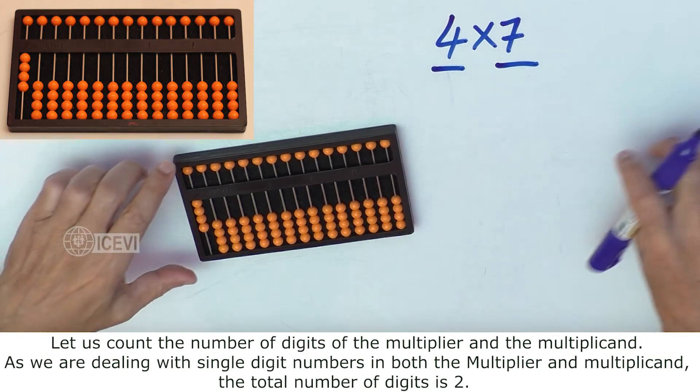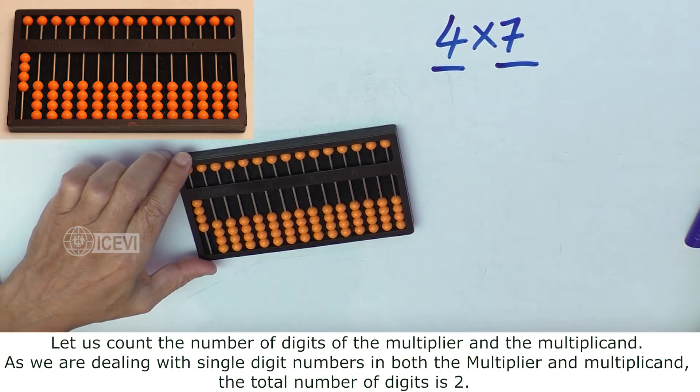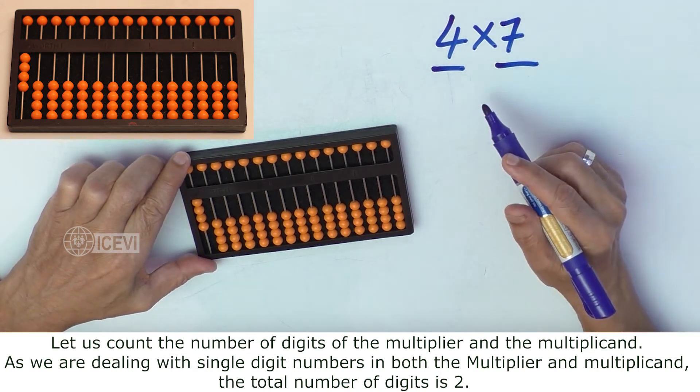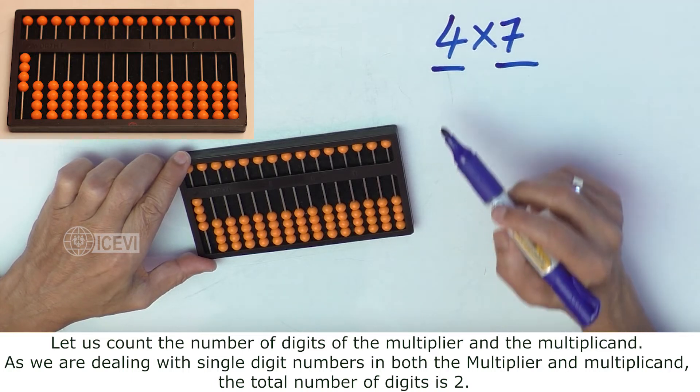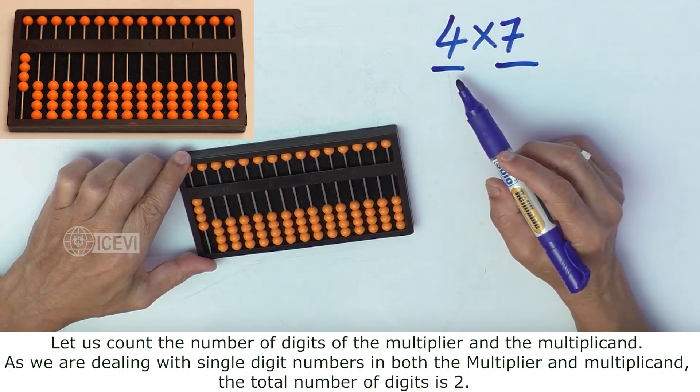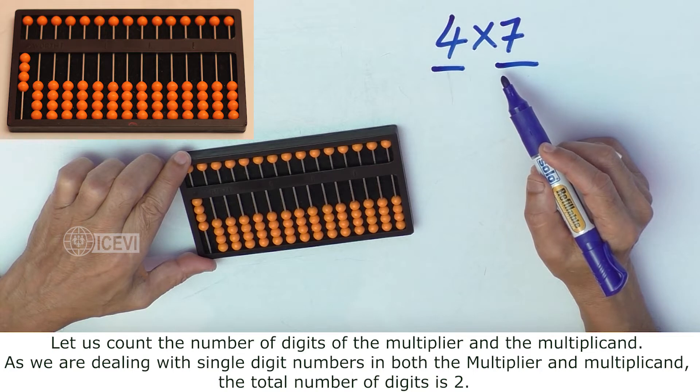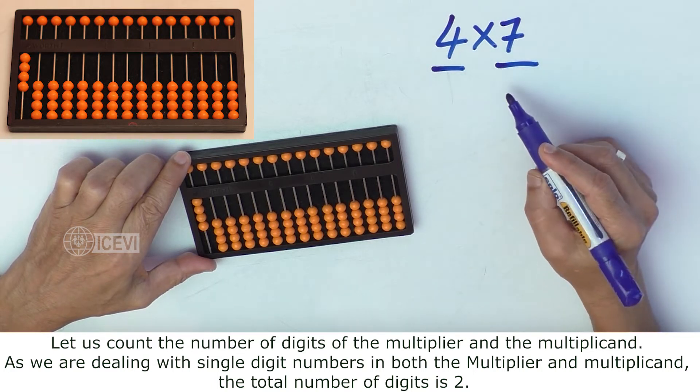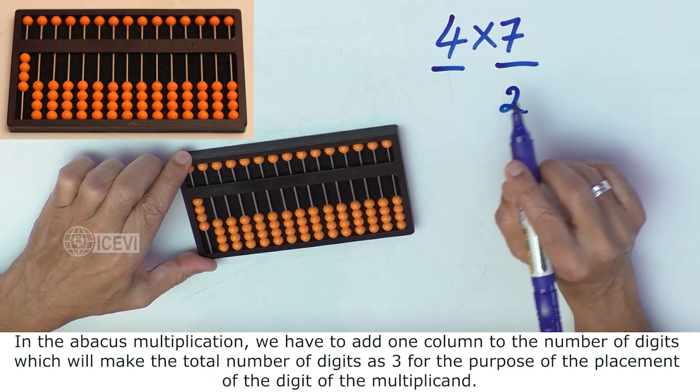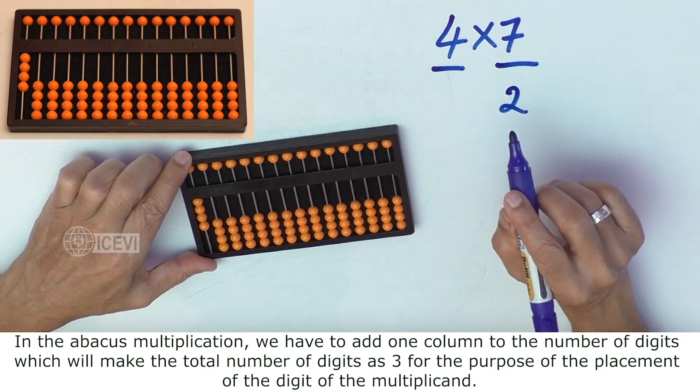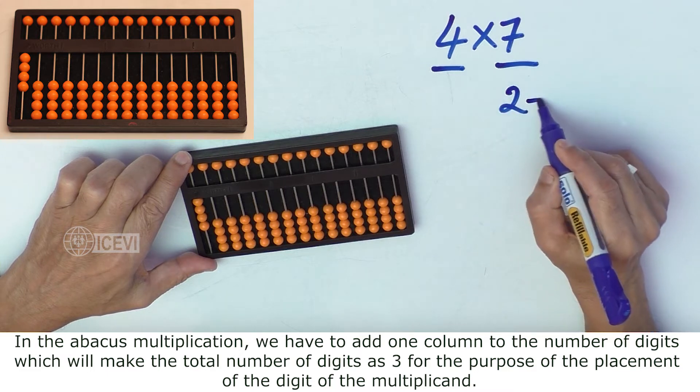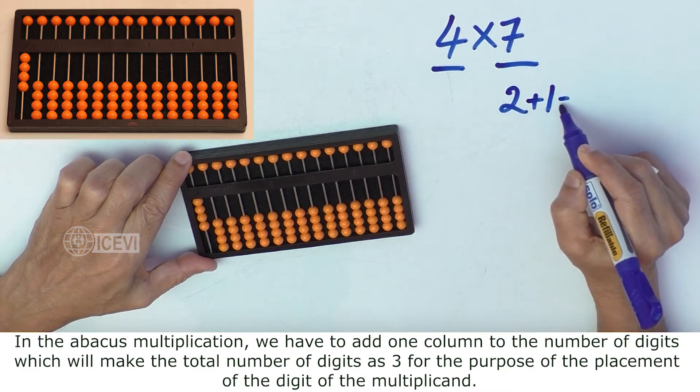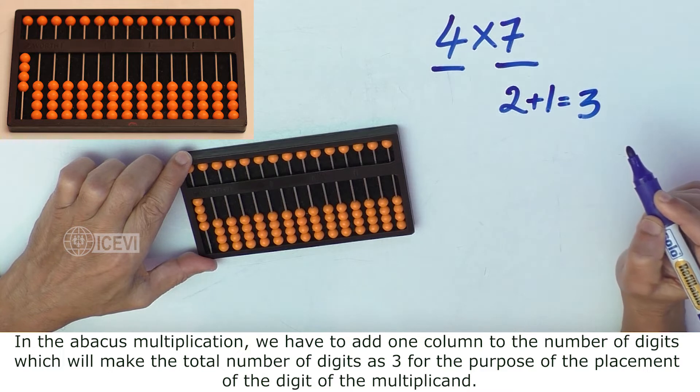Let us count the number of digits of the multiplier and the multiplicand. As we are dealing with single-digit numbers in both the multiplier and multiplicand, the total number of digits is 2. So, in abacus multiplication, we have to add one column to the number of digits, which will make the total number of digits as 3.